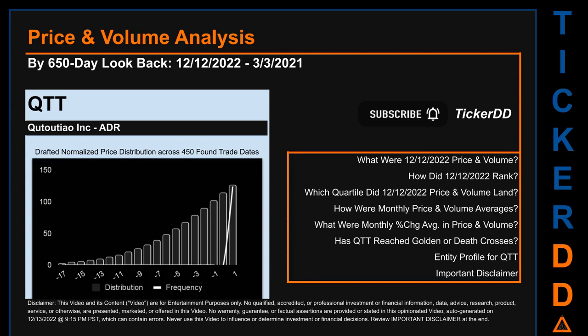QTT went public on September 14, 2018, which was roughly four years ago. Looking back 650 calendar days from Monday, December 12, 2022, we found 450 applicable trade dates for use in our analysis. The chart shown on this page is our initial attempt at studying the price for QTT after dynamically normalizing price distribution across those discovered trade dates. The bar chart is the generated distribution and the overlaid line graph, if shown, is the frequency of prices on the x-axis. We will enhance this look as our AI model progresses. Remember that this is just a drafted, in-progress, observational model to best fit abstracted third-party data into various opinionated views. For now, let's dive into price and volume analysis.